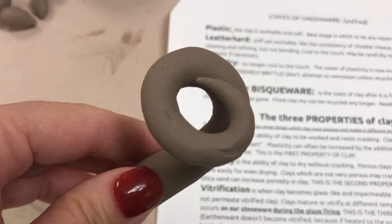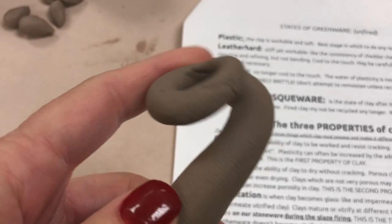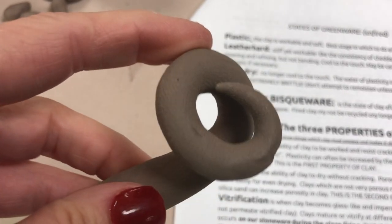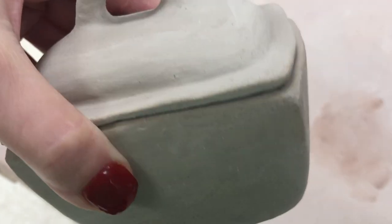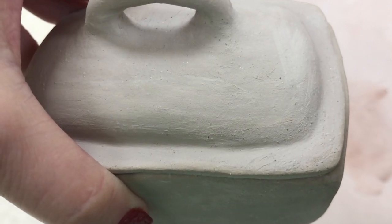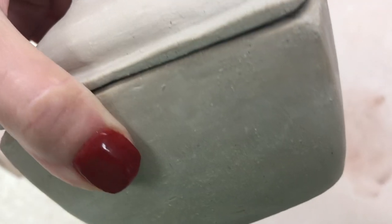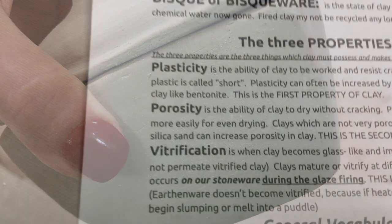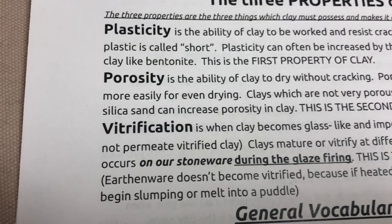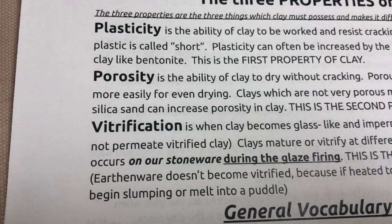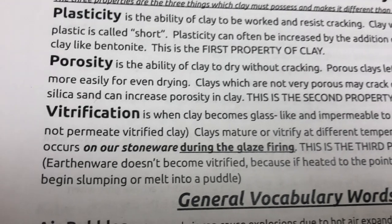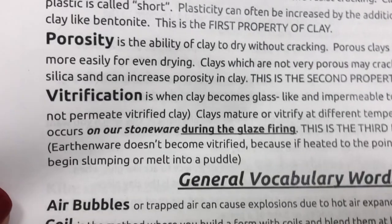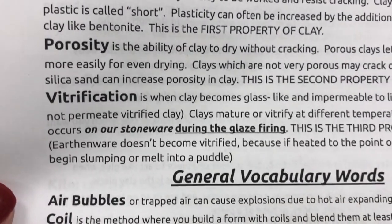Next are the three properties that a usable clay must possess. The first is plasticity — clay must have the ability to be worked and resist cracking. The second property, in the drying stage, is porosity — clay has to have the porosity to dry without cracking. Porosity can be increased by the addition of grog to a clay body. The third property is vitrification: the ability of clay to become glass-like during firing. It only really happens with stoneware during the glaze firing — earthenware never gets fully vitrified because it stays porous.